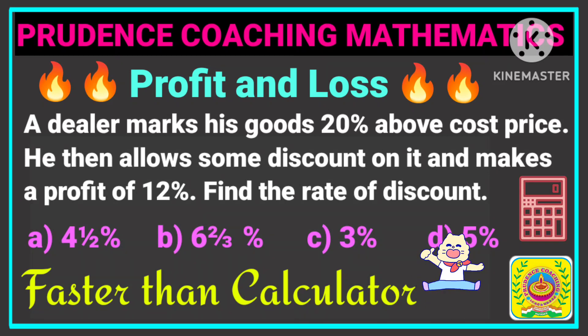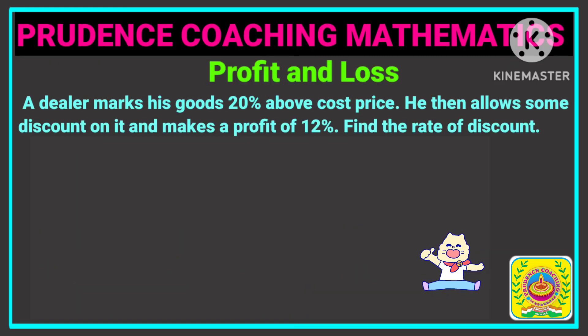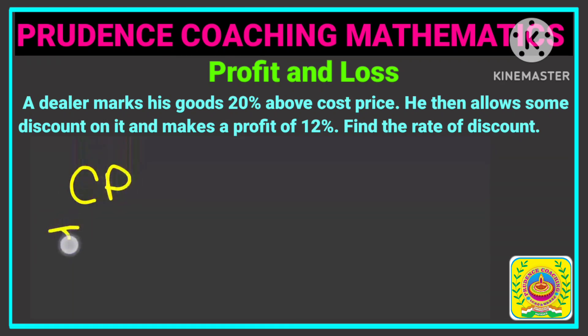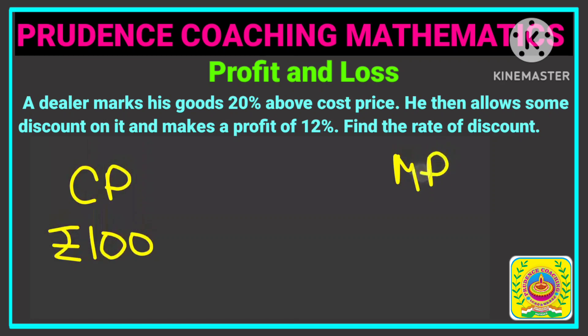A dealer marks his goods 20% above cost price. Let his cost price be rupees 100. Since he is marking at 20% above cost price, his marked price will be 100 plus 20, that is rupees 120.